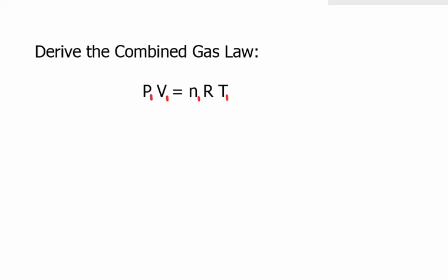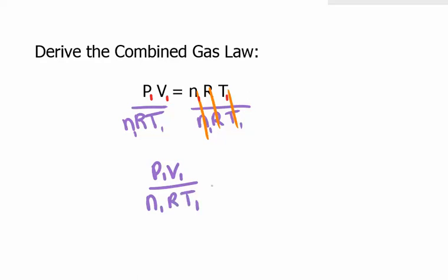Let's rearrange it. Let's divide both sides by nRT. On this side, it all cancels, so now we have this equals this, all cancels, but what's left is a 1.